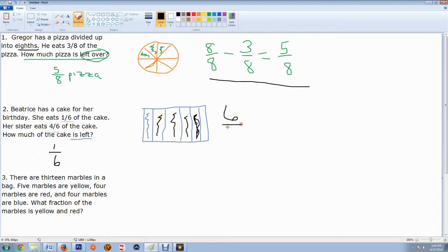Well, we'd start out with our total cake, which is six out of six pieces. And we would subtract the one-sixth that Beatrice got to eat. So we don't change our bottom here in subtraction. Six minus one is five, but our sister here, she ate four-sixths.